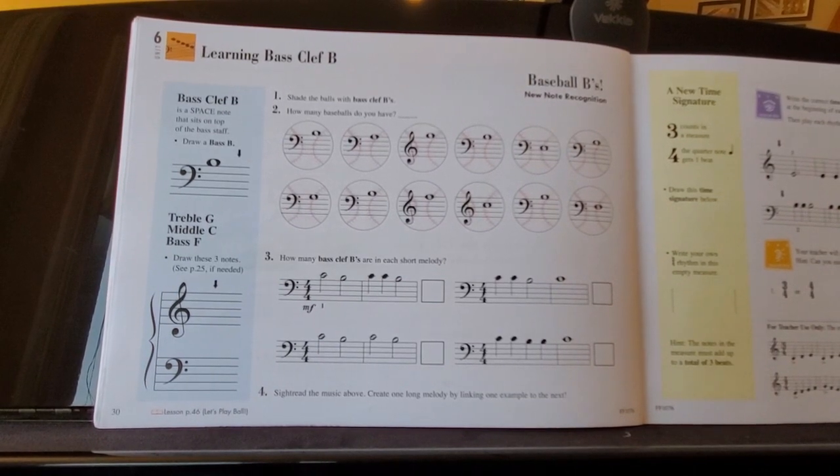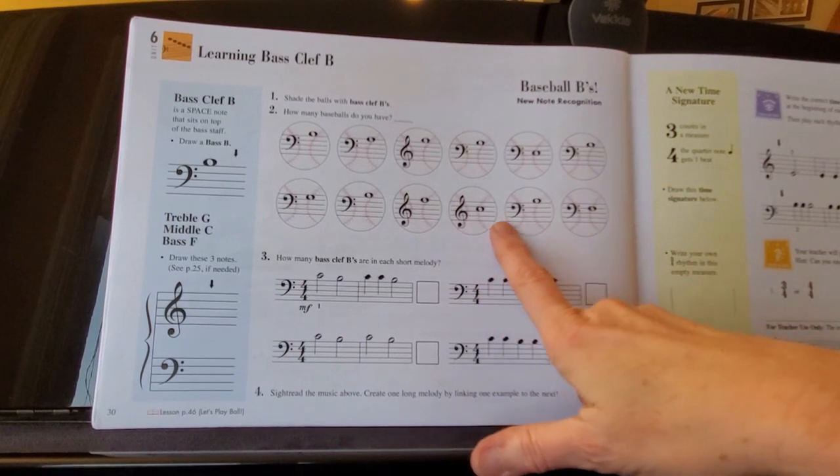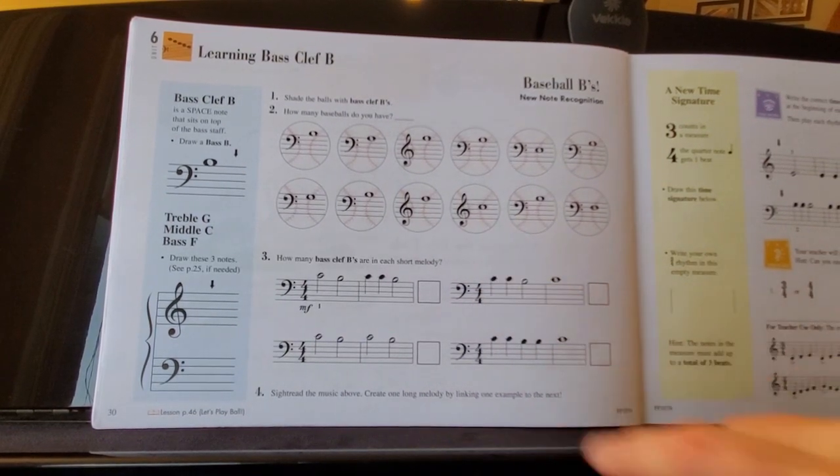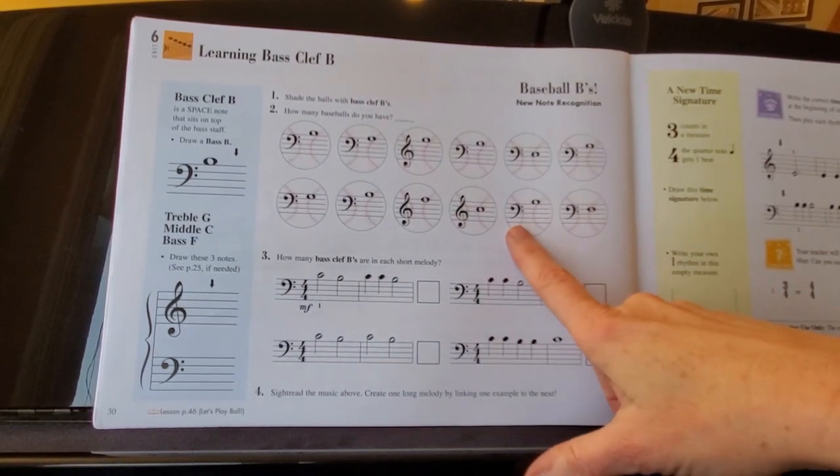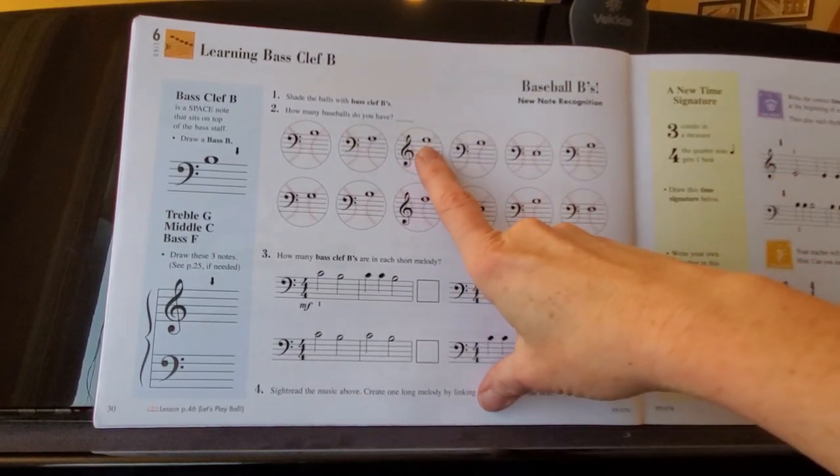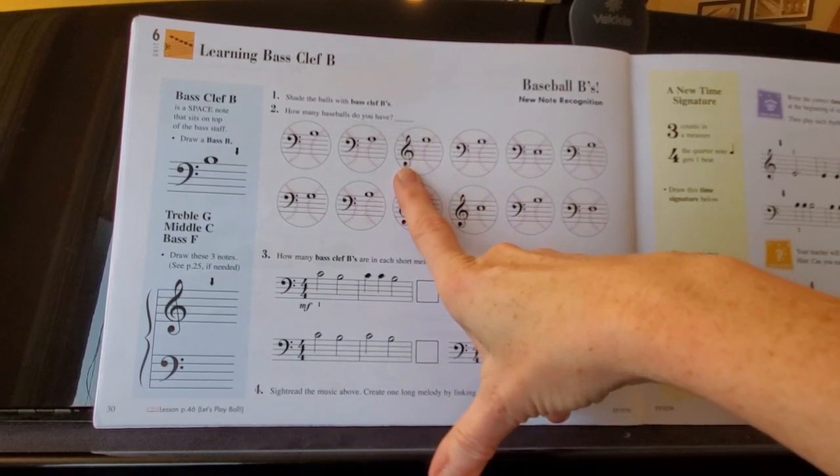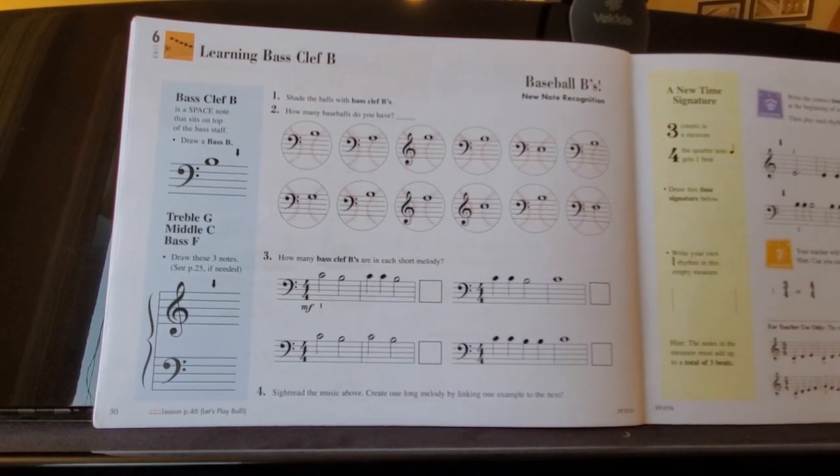The important thing to note though is that some of these are treble clefs and some of them are bass clefs. So the B that we are learning is only in the bass clef. If you see something like this, it kind of looks like a bunny sticking its head out of a burrow, but it's not B because here's the treble clef with it, so don't fall into that trap.